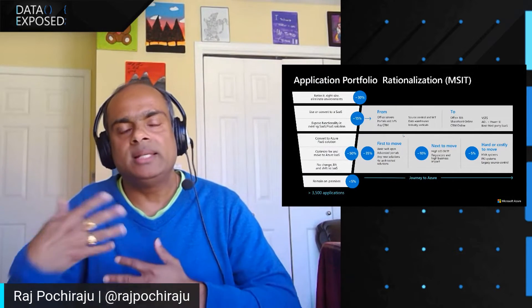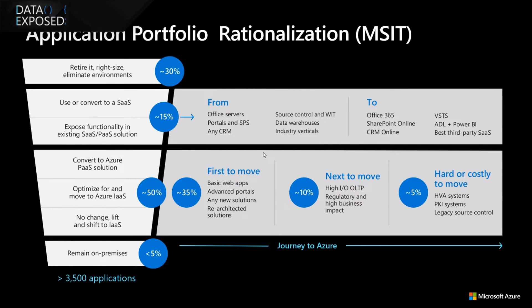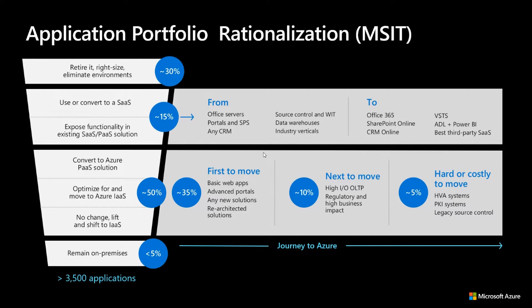I definitely want to take the MSIT example. MSIT is a large enterprise, and the way they took their migration journey follows those phases I mentioned. In the discovery and assessment phase, they scanned through approximately more than 3,500 applications and put them into different buckets. About 5% of the applications remained on-premises because of the complexity and legacy nature of those applications — there was no real value in taking that complex migration journey to the cloud.